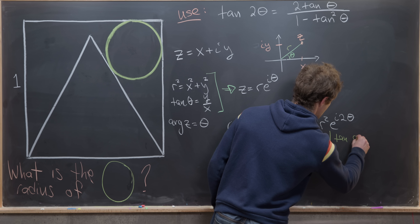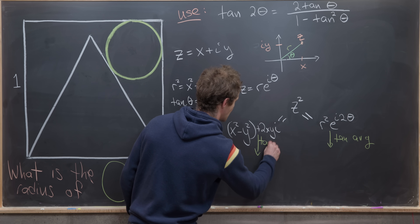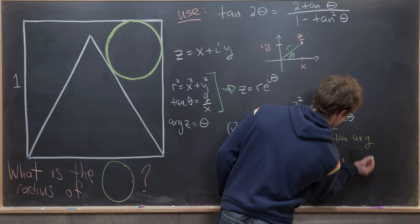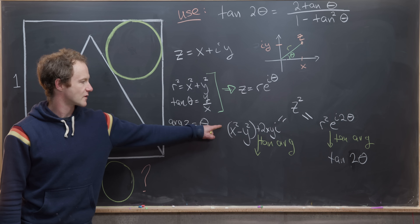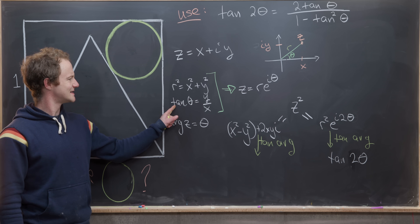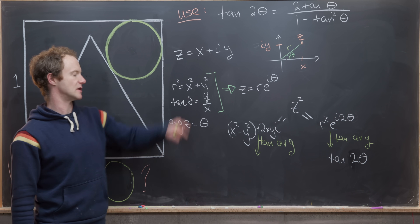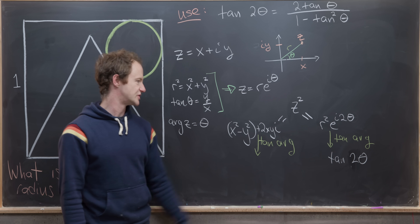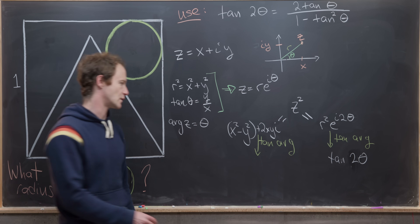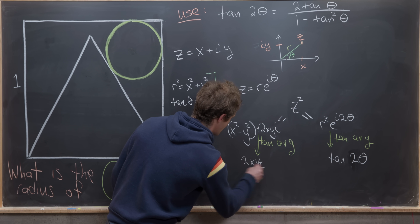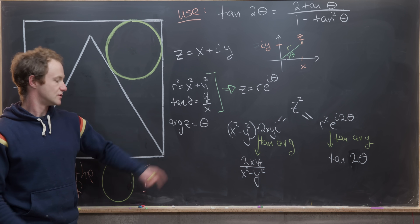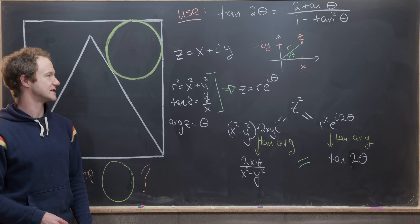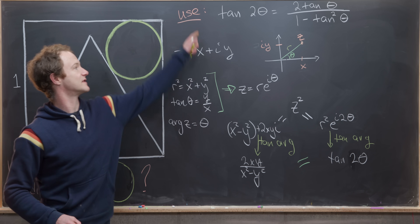Now we extract the tangent of the argument of both sides. On the right-hand side the argument is 2θ, so we get tan(2θ). On the left-hand side, the tangent of the argument is the imaginary part divided by the real part, which is 2xy over x² − y². So we have the equation: tan(2θ) = 2xy / (x² − y²).